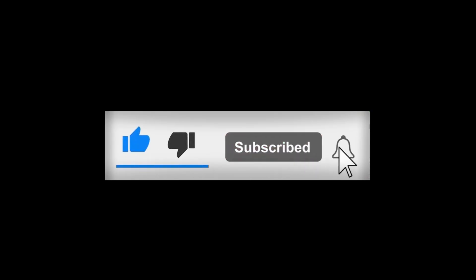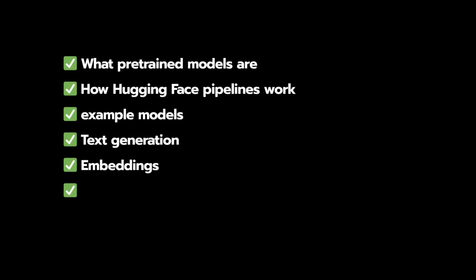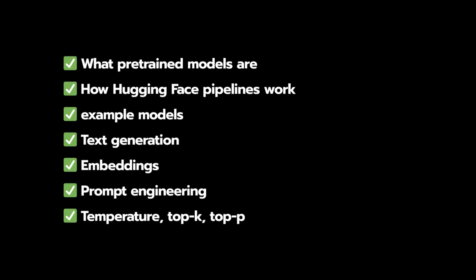In this video we'll be covering what pre-trained models are and how the Hugging Face pipeline works. I'll be showing you different examples of different models — we'll be doing text generation and embeddings. I'll also let you know about the basics of prompt engineering, because when using any model for text generation we need to know how to provide the correct prompt. The prompt is very crucial in generative AI scenarios. We'll also be covering temperature, top-k, and top-p properties.